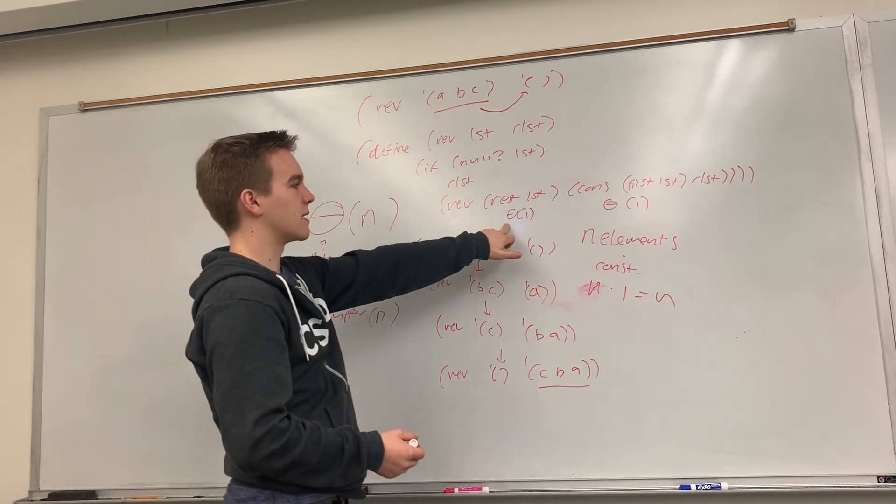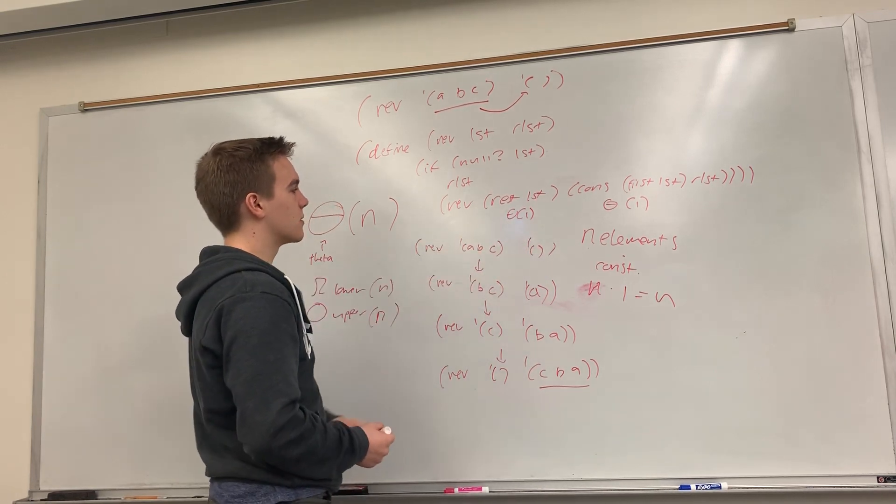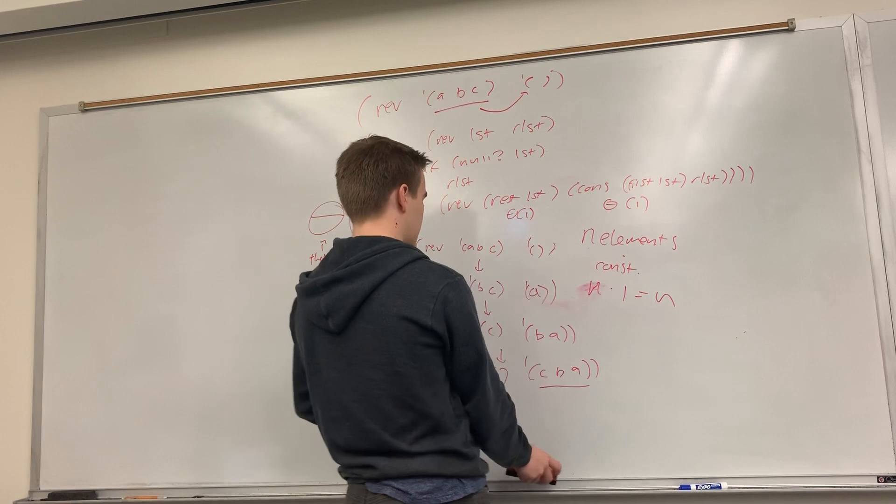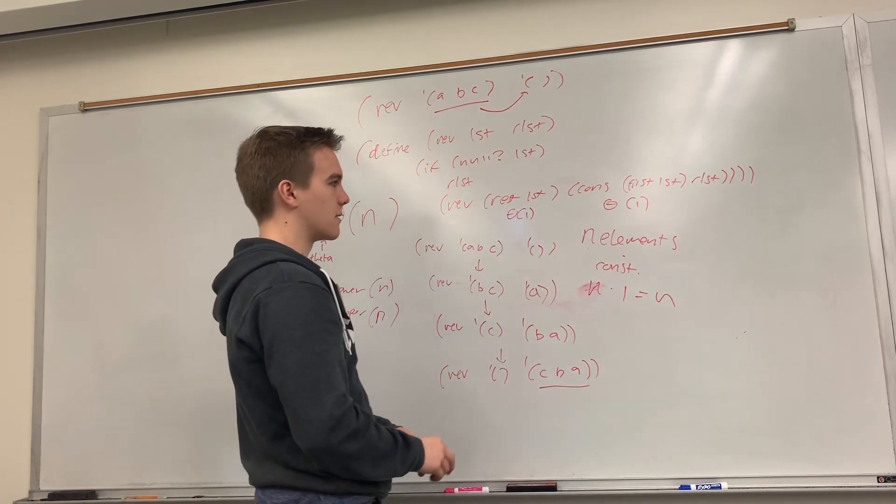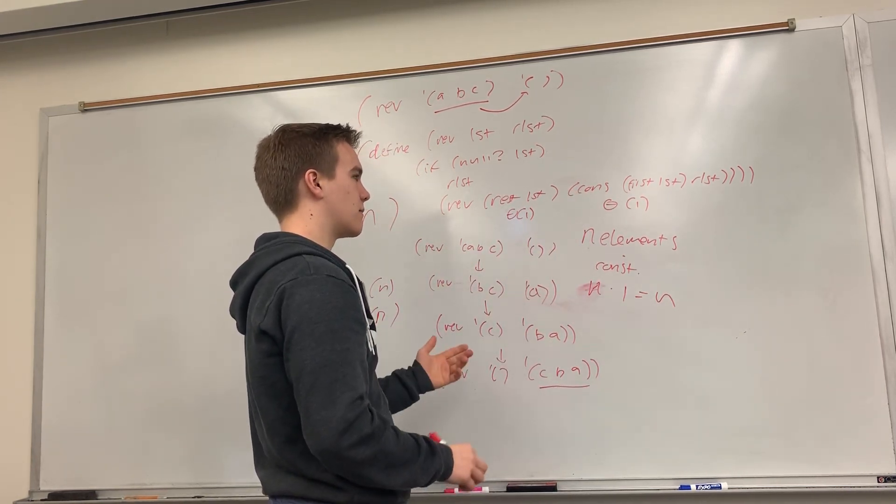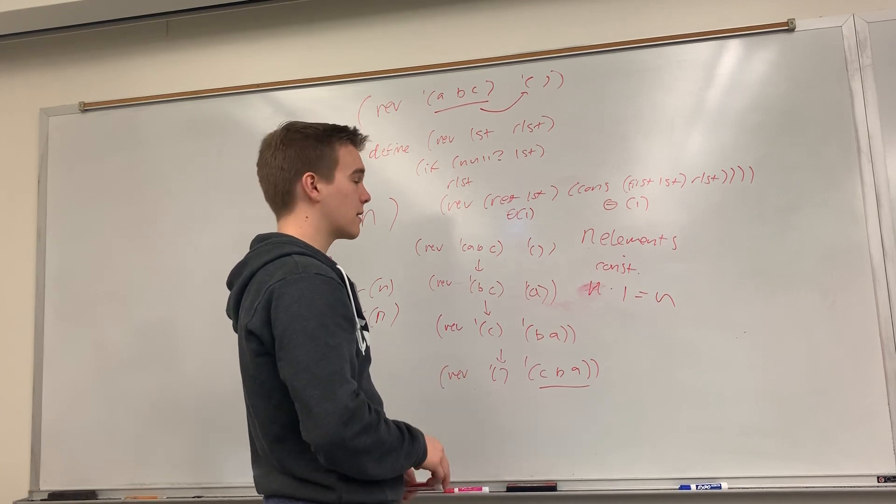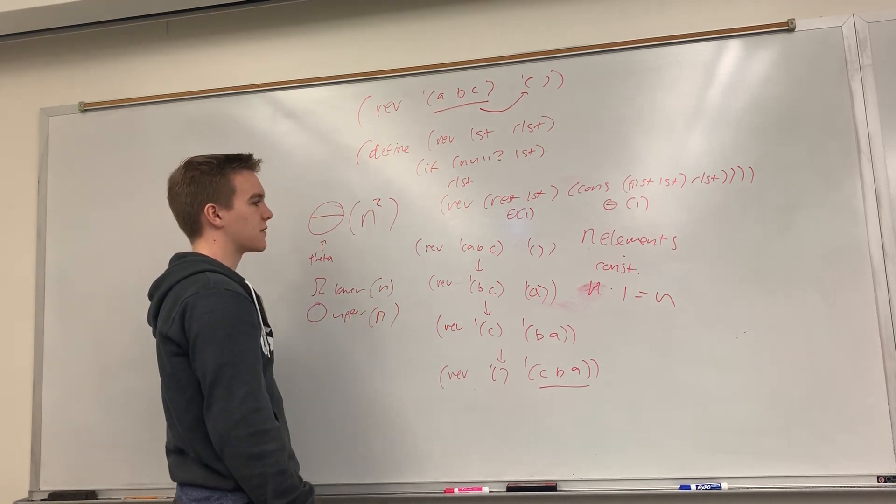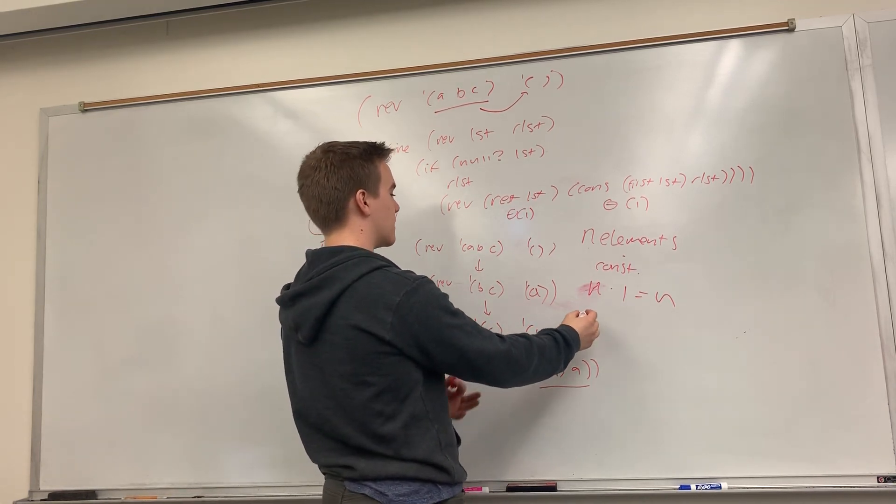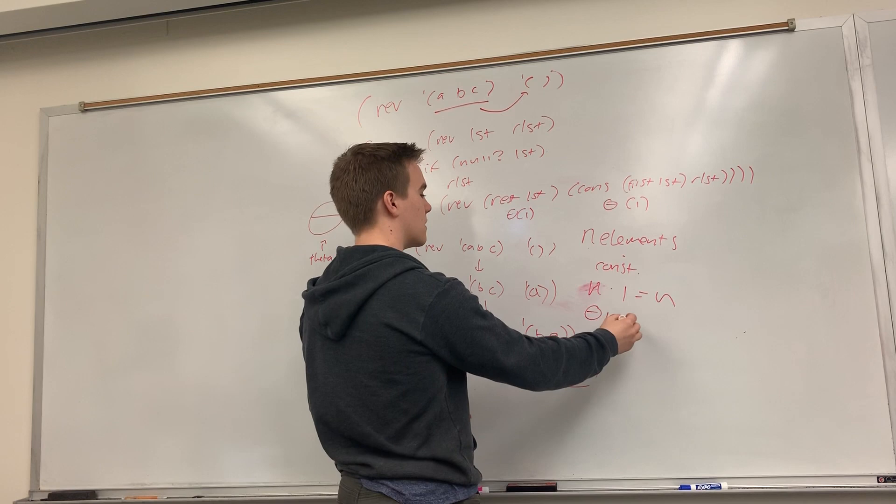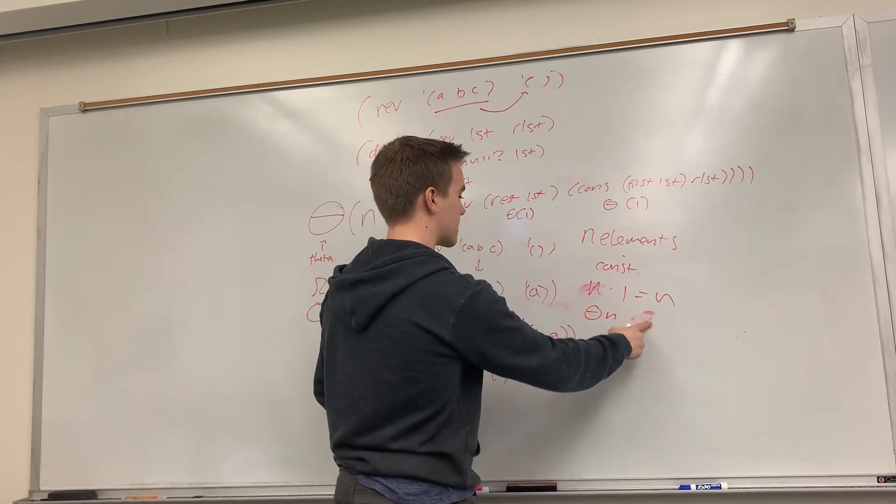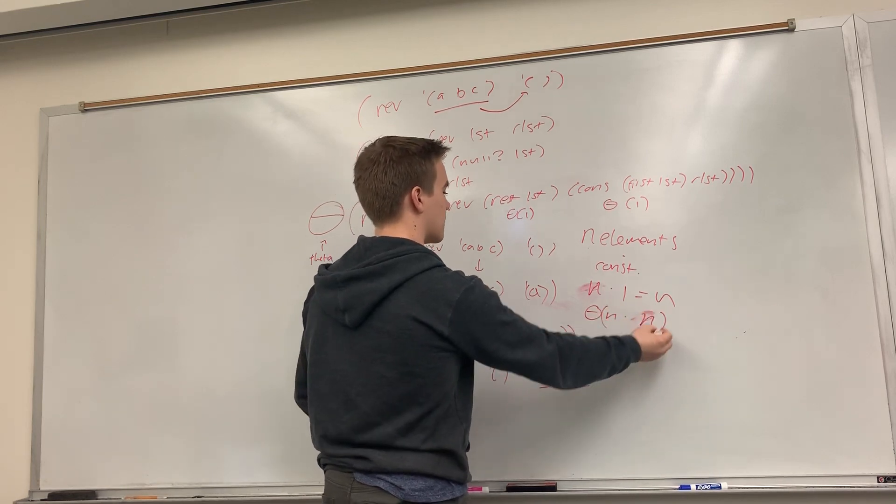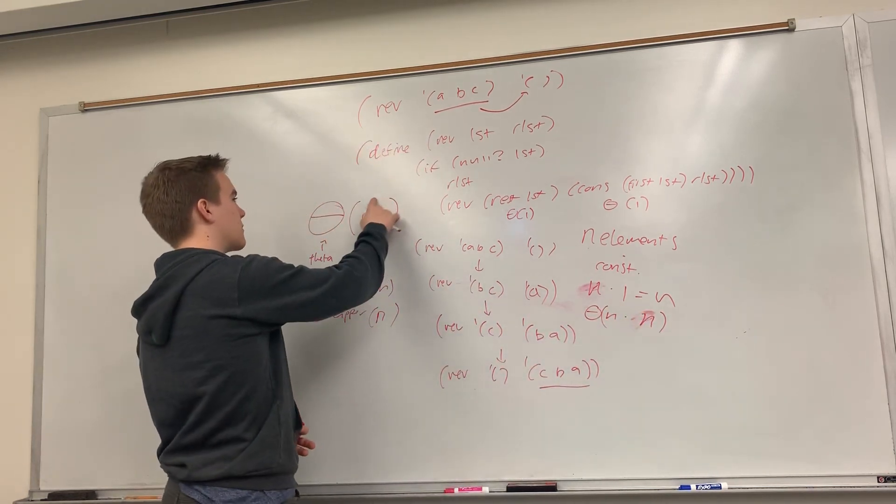Okay, I mean, if one of these was, like, an O of n procedure, or a theta of n procedure, say here, for some reason, I wanted to take, like, the length of the list, which is a theta of n procedure, I think, then this would take theta of n squared, because it would have to run a theta of n procedure n times, and n times n is n squared, but we don't, instead we have theta of n.